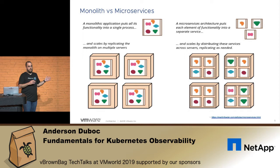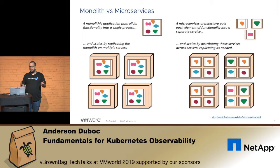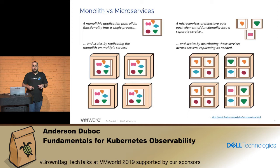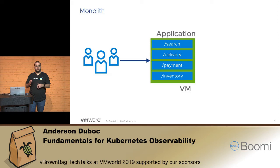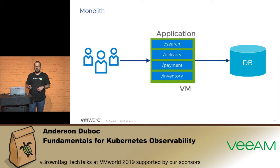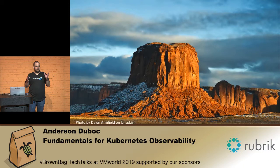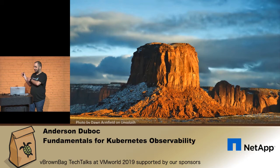So we're down to the conversation about monoliths and microservices. A monolith is an application that puts all its functionality into a single process. A microservices architecture puts each element of functionality into a separate service. When you have to scale a monolith, you have to scale everything. When you have to scale a microservice, you just have to scale that service. Looking at a monolith application, I have a source, delivery, payment, and inventory module. If I need to persist data, I have a database. If I need to scale that monolith, I need to replicate everything — I have to have two big rocks of that.